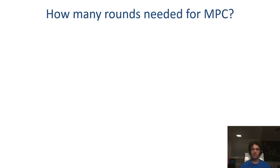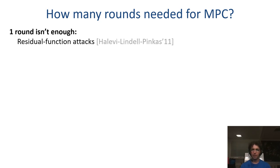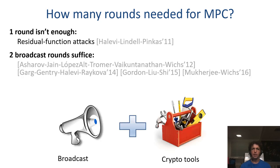A central question in the study of secure protocols is how many rounds do we actually need in order to compute a function? Clearly one round isn't enough, because corrupted parties can simply wait, get the messages from all honest parties, and then complete the execution based on inputs of their choice, and this will break privacy. In recent years, it was shown that in the broadcast model, where every party can reliably send a message to all other parties, two rounds suffice to compute any function.